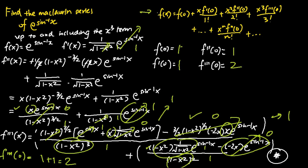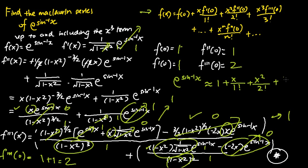We can now apply the formula shown in the top right-hand corner to find the Maclaurin series of e to the power of sine inverse x up to and including the x cubed term. We get: f(0) is 1, plus x times f'(0) which is 1 divided by 1 factorial, plus x squared times f''(0) which is 1 divided by 2 factorial, plus f'''(0) which is 2 times x cubed over 3 factorial. Since 3 factorial equals 6, simplifying gives: e to the power of sine inverse x equals 1 plus x plus x squared over 2 plus x cubed over 3.